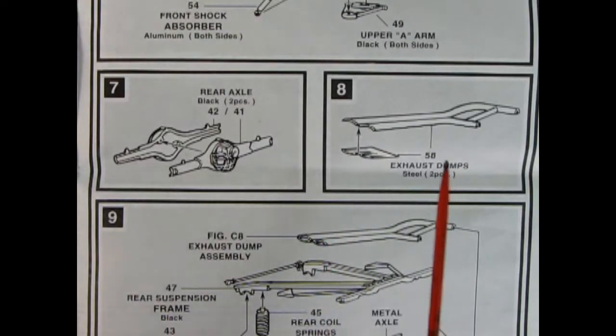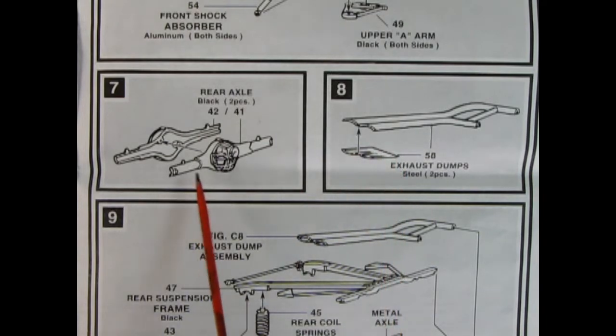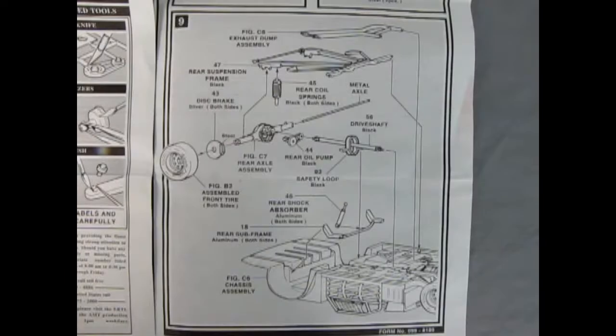Panel seven and eight are showing the exhaust dumps going together here and our two-piece rear axle getting glued together over here. In panel nine we can see the exhaust dumps being put in place as well as our rear suspension frame and then we've got our springs going in there. There's the differential from step seven with the metal axle going through. We also have our disc brakes, got to put one over here, and then we also have a rear oil pump and then a drive shaft going in place with the big loop in here. Safety loop in case it breaks away. And then we've got our wheels going on and our shock absorbers as well as the rear subframe. So all this gets sandwiched down right in here onto the back of our chassis.